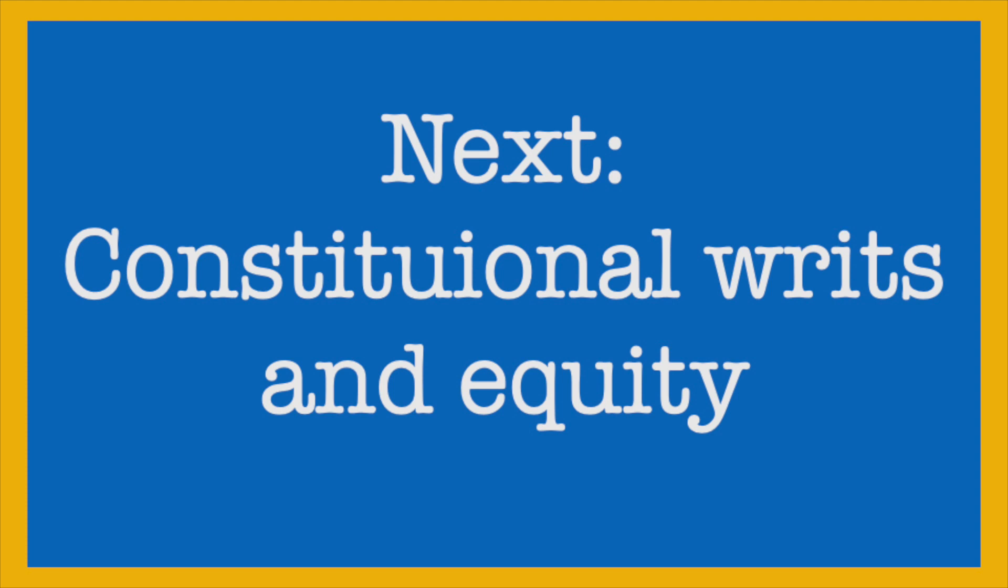So to this point, we've met five old-fashioned prerogative writs. We have one more video to look at this week. That video looks at what happened when the colonies of Australia became a federation. What happened to those common law writs when the Constitution was implemented? One more video to go. I'll see you there.